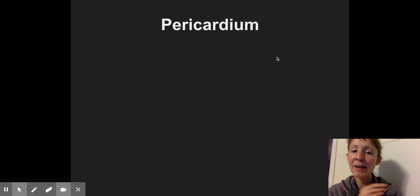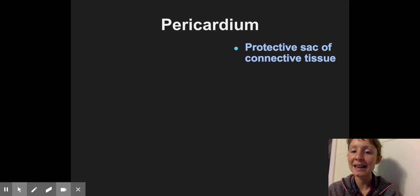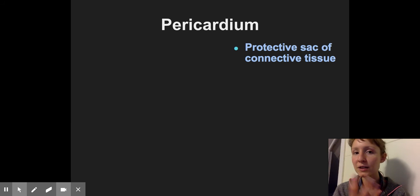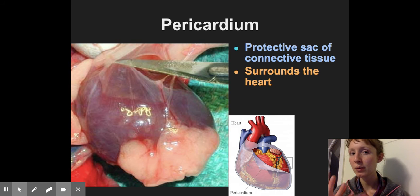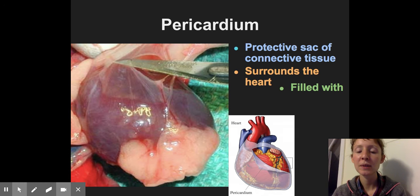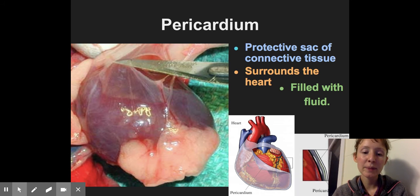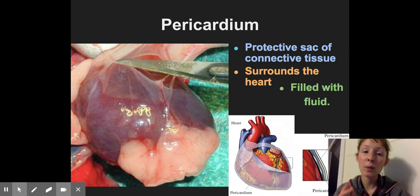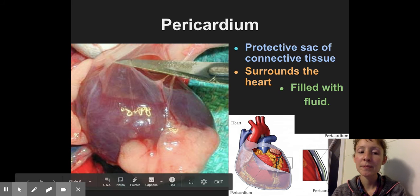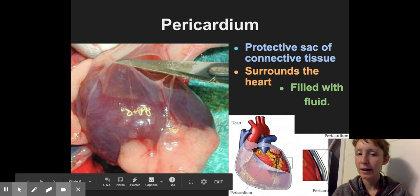So the pericardium is the outer membrane that kind of protects the heart. It is a protective sac of connective tissue that produces serous fluid that helps lubricate the heart and prevent friction when those different parts are moving. It is again filled with fluid. And these are some diagrams that kind of show how the pericardium surrounds the heart. There are different parts of the pericardium and you are welcome to look at those in your textbook. I'm not going to get into the details right now.